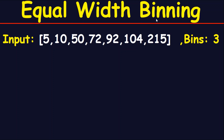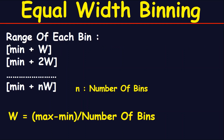We are going to apply equal width binning to this input data, and the number of bins should be equal to 3. The first step is to get the range of each bin. The range of the first bin is equal to the minimum number in the data plus w. The second bin is the minimum number plus 2 multiplied by w, and so on till you reach the last bin, which is the minimum number plus n multiplied by w, where n is the number of bins. W is equal to the maximum number minus the minimum number divided by the number of bins.